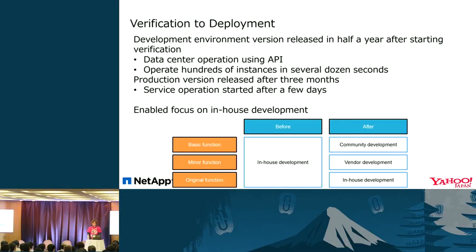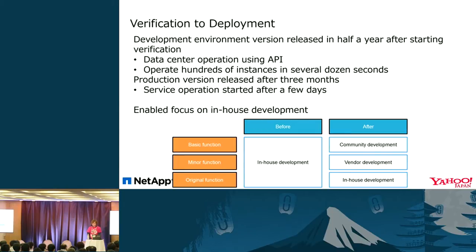This is our verification to deployment timeline. We were able to release a development environment six months after validation. By moving to an OpenStack environment, we can manage the data center through the OpenStack API, and within several dozen seconds, we can start several hundred instances. Six months after the development environment release, we released the production environment. Service team members were already used to OpenStack, so several days after release, we were deploying services in the OpenStack environment.